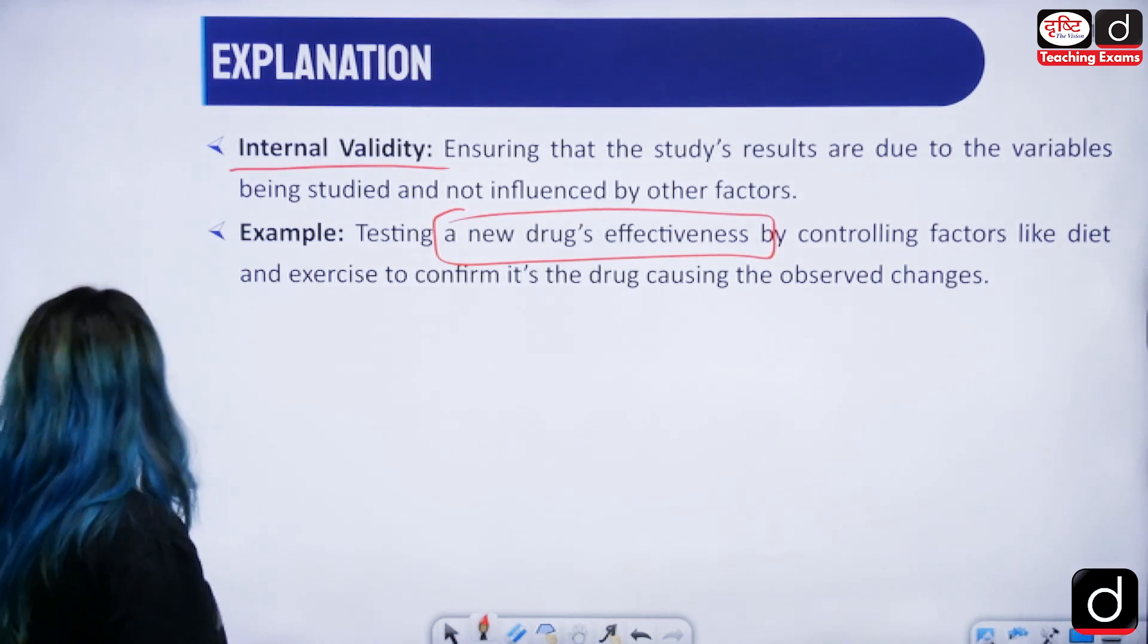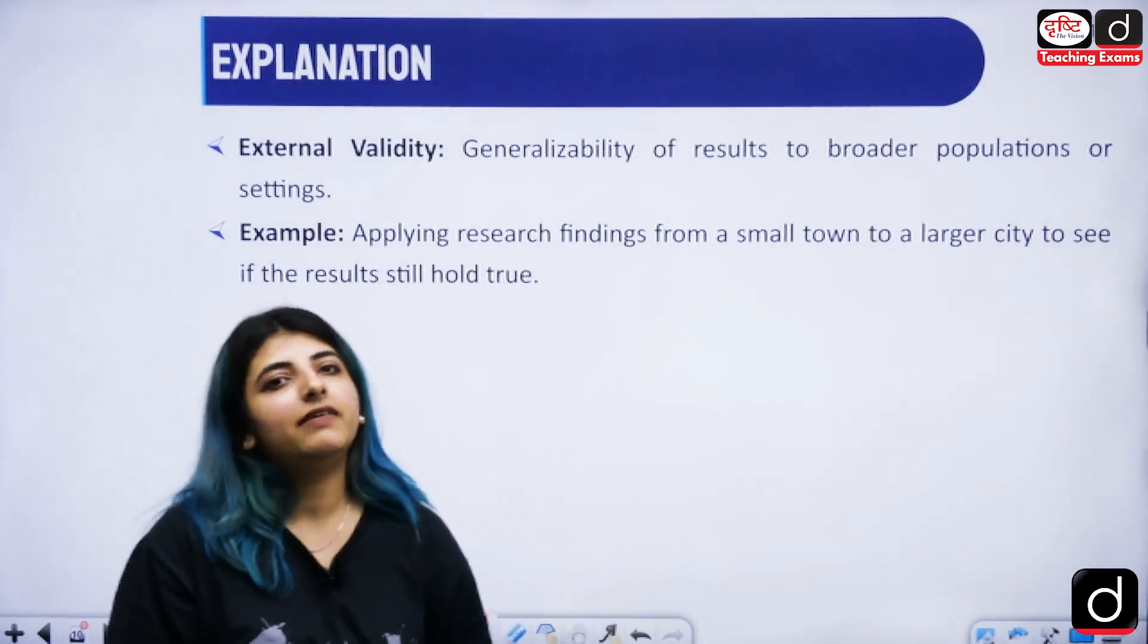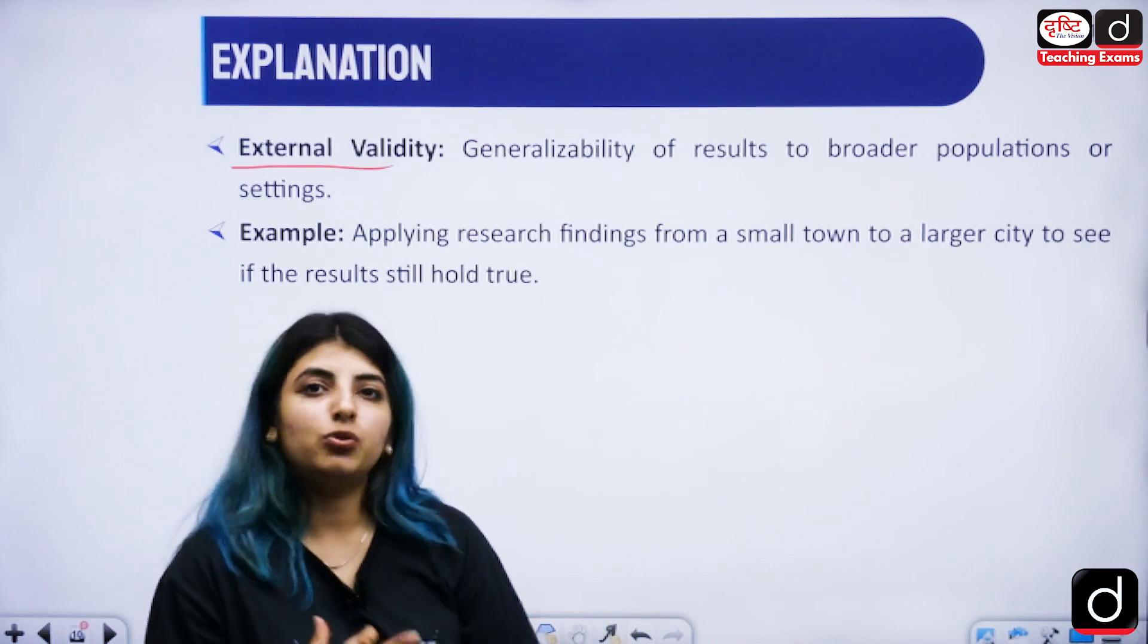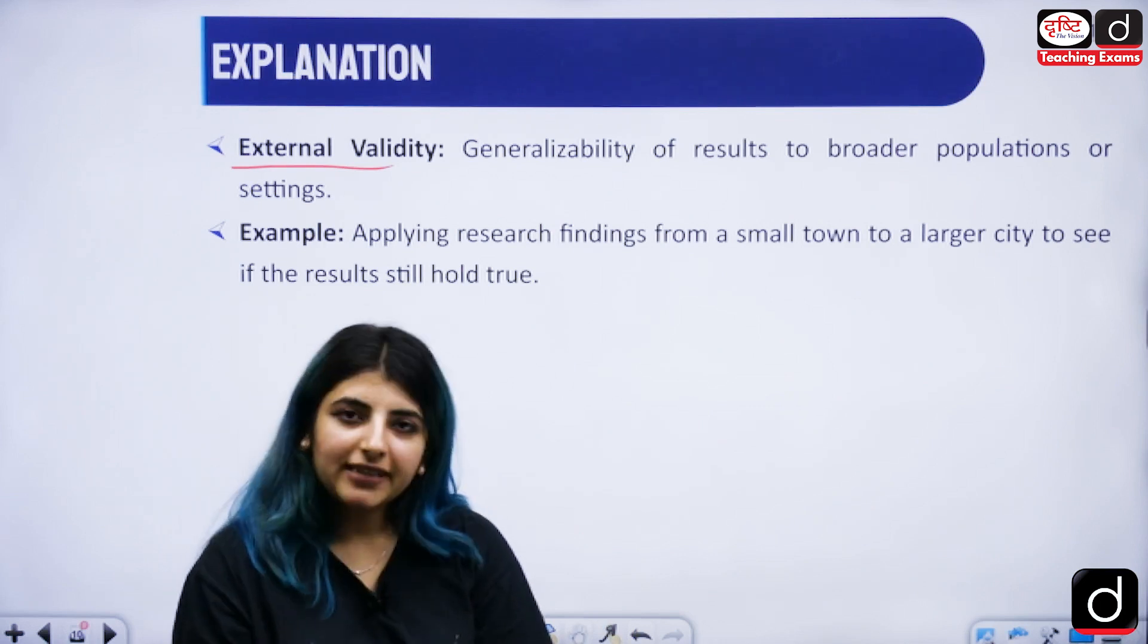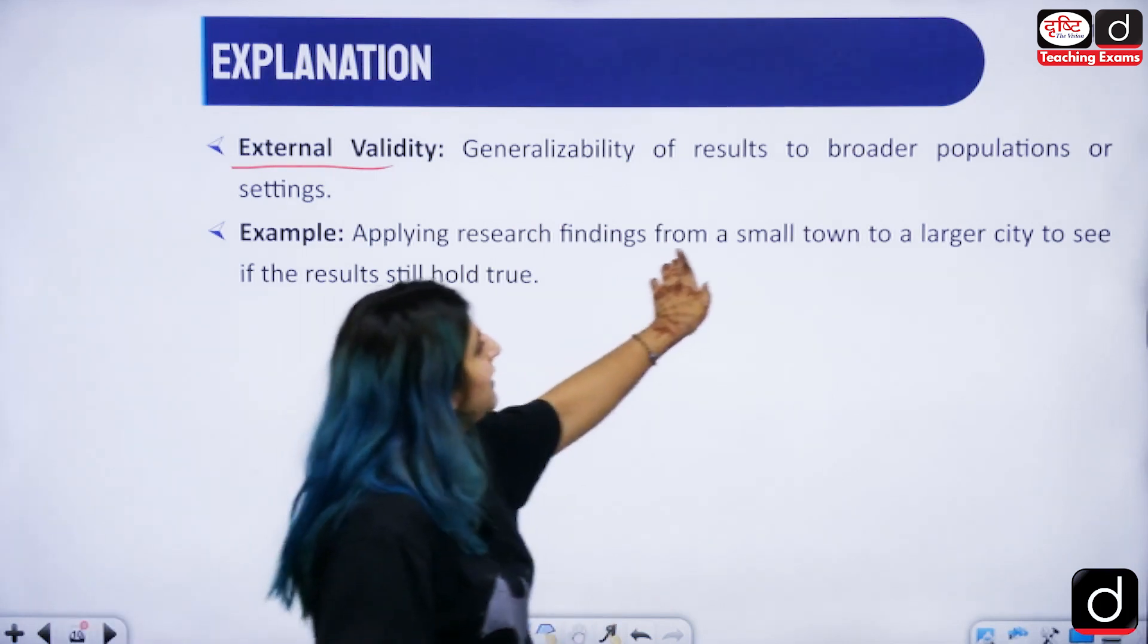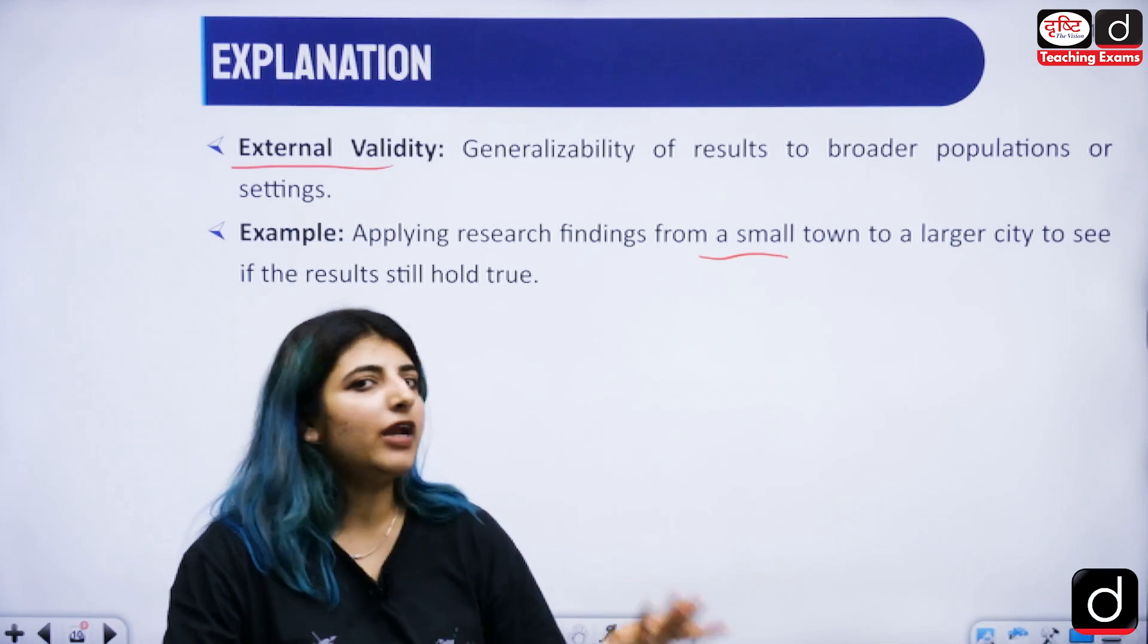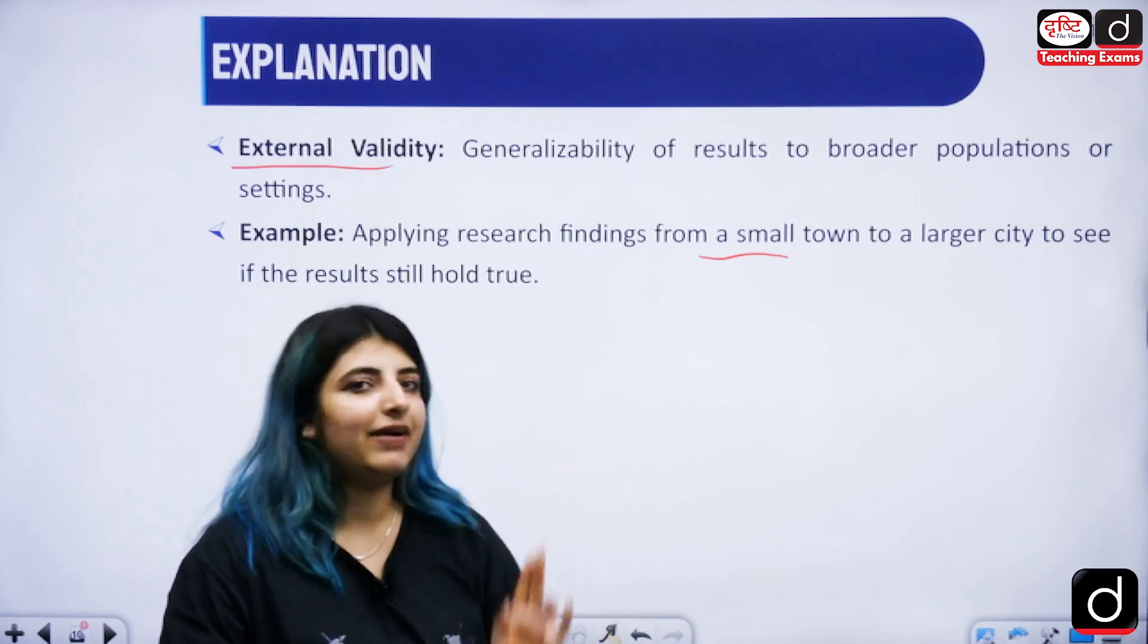Then we have external validity. Ecological validity is the subtype of external validity. In external validity we want to generalize the findings. We want to see whatever we have found through the samples in our study, how valid is it, how beautifully it is replicated or applied or generalized to a larger subset. From a small town you have done research on a small group of people, now you want to apply the same thing on a larger group of people in a larger city. If the results come out to be true it means your research is externally valid as well.